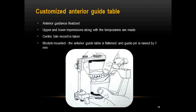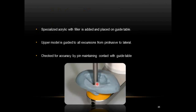To make a customized anterior guide table: once the anterior guidance is finalized, upper and lower impressions of the provisionals are made, a centric bite record is taken and models are mounted. The anterior guide plane is flattened and the guide pin is raised by 1 mm. Then specialized acrylic with filler is added and placed on the guide table, and all excursions of the upper model from protrusion to lateral are performed, recording the movements in the acrylic. The pin must maintain contact with the guide table throughout to check accuracy. The main advantage of this customized anterior guide table is that it permits verification by the dentist whether the laboratory technician has followed the instructions.